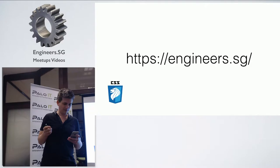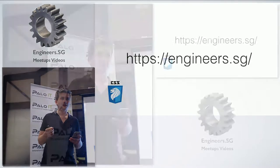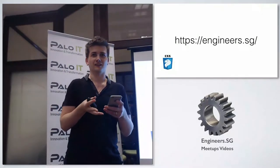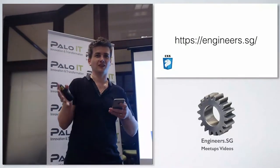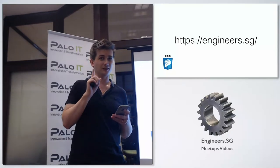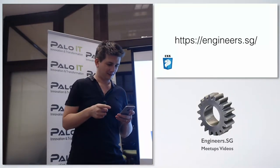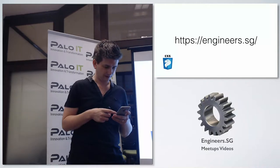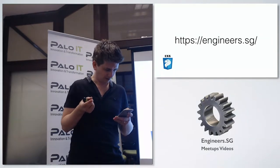CSS shapes are in Firefox, which is awesome. So there's a designer here and she could start doing weird shapes of stuff, and we can code that now — at least we're getting close to it. Scroll snap is also coming.